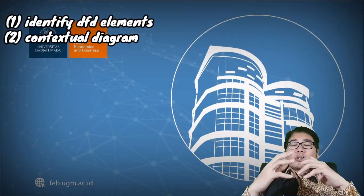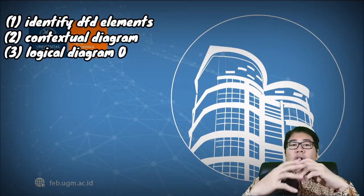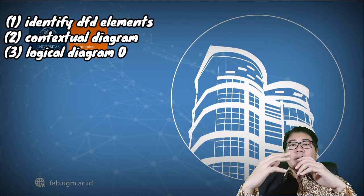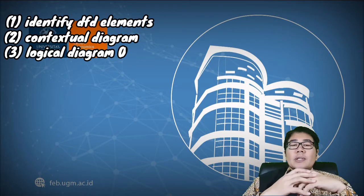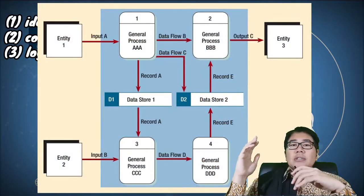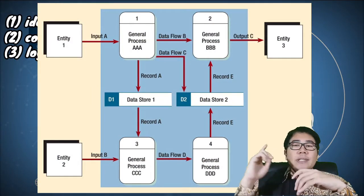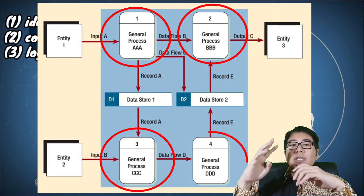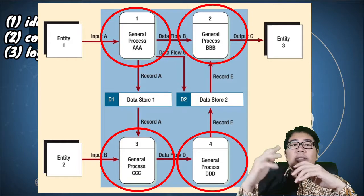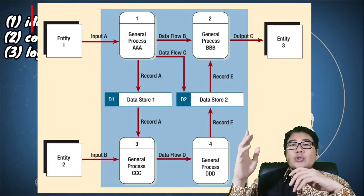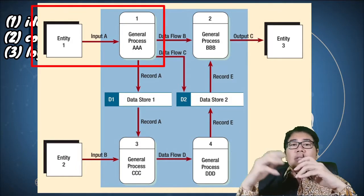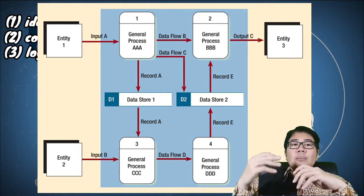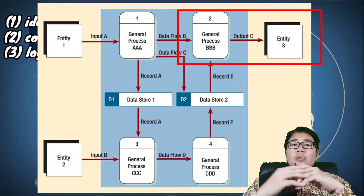The third step is to create a logical diagram level zero, which is a more detailed diagram compared to the context diagram. Now we can see the data sources. The previous system zero can now be broken down into four more detailed processes. Entity one sends data A to process one, while entity two sends data B to process three. And entity three receives data C from process two.